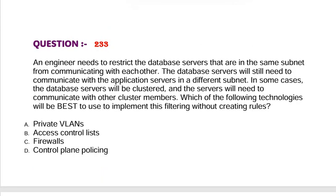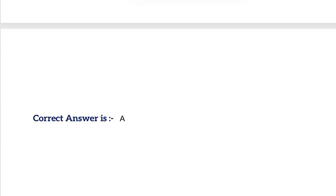Question: An engineer needs to restrict database servers that are in the same subnet from communicating with each other. The database servers will still need to communicate with the application server in a different subnet. In some cases, the database servers will be clustered and will need to communicate with other cluster members. Which of the following technologies will best implement this filtering without creating rules? Option A, private VLANs. Option B, access control lists. Option C, firewalls. Option D, control plane policing. Correct answer is Option A.